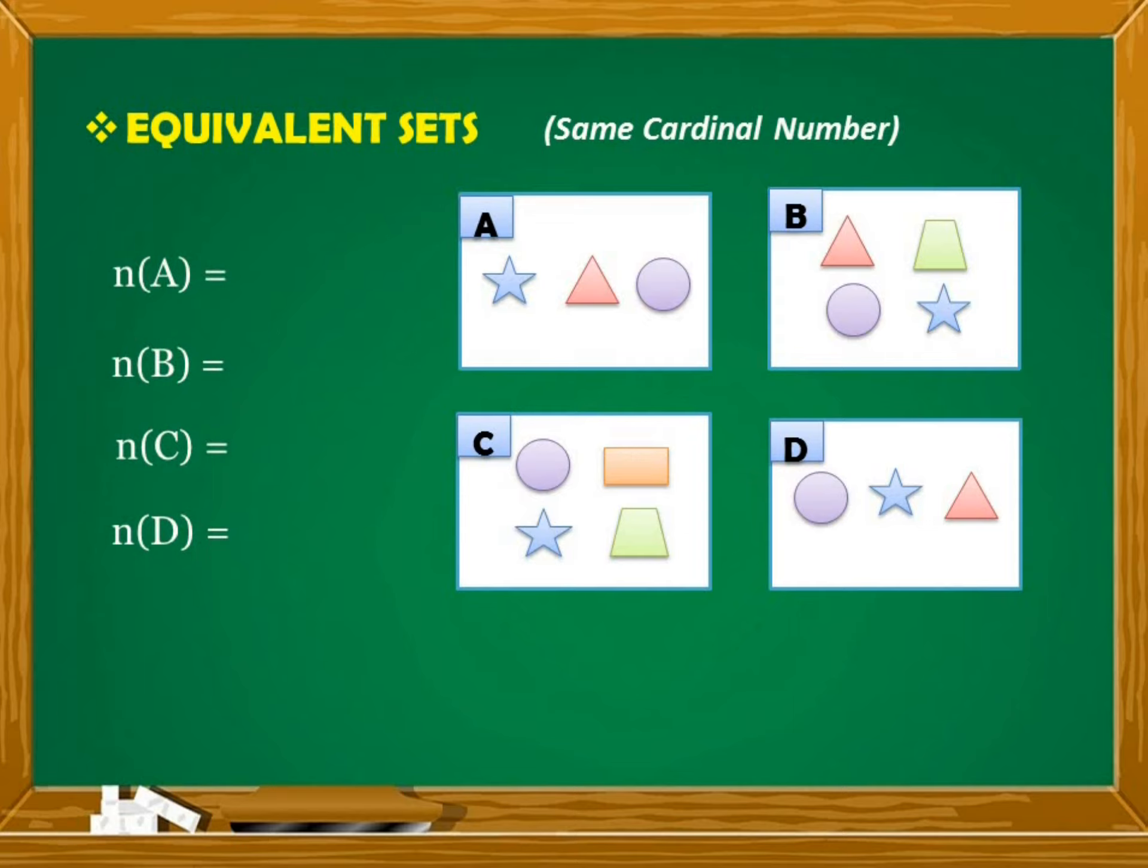let's find the cardinal number of each set. Set A has three elements, so N of A is equal to 3. Set B has four elements, so N of B is equal to 4. And similarly, N of C is equal to 4 because it has four elements. And N of D is equal to 3.